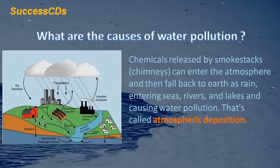What are the causes of water pollution? Chemicals released by smokestacks can enter the atmosphere and then fall back to earth as rain, entering seas, rivers and lakes and causing water pollution. That's called atmospheric deposition.